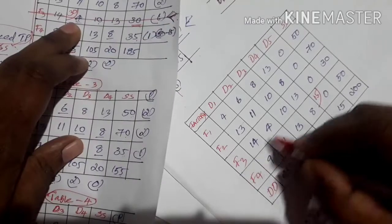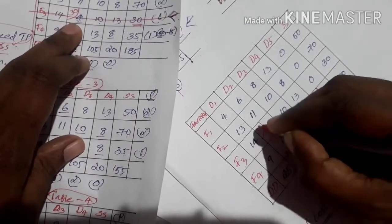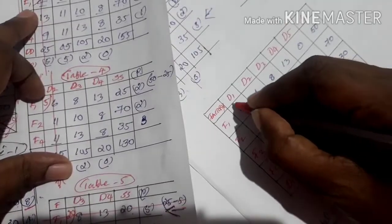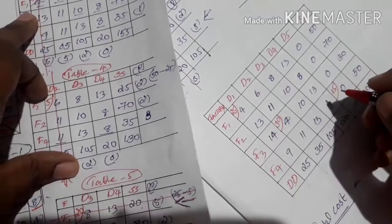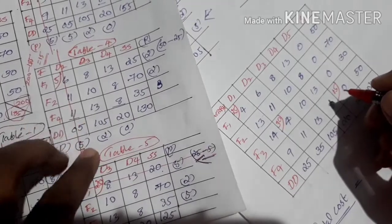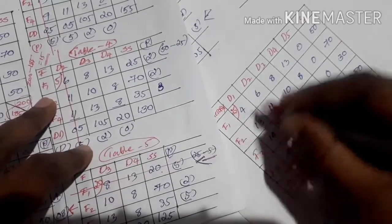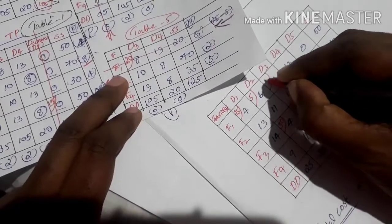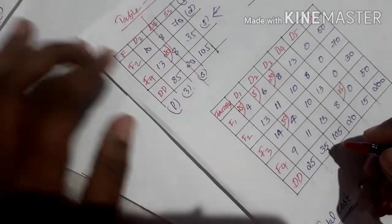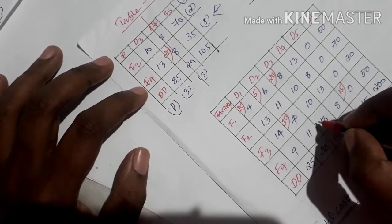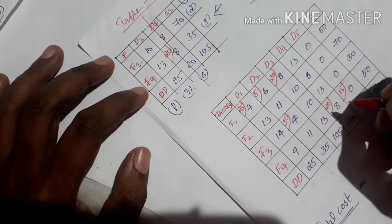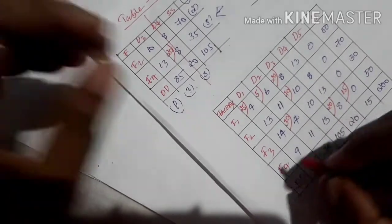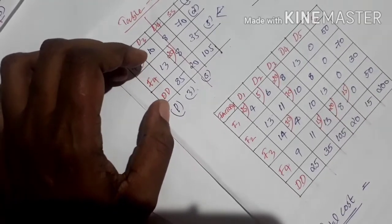Summarizing all allocations: F3-D2 at cost 4, 30 units. Table 3: F1-D1 at cost 4, 25 units. Table 4: F1-D2 at cost 6, 5 units. Table 5: F1-D3 at cost 8, 20 units. Table 6: F4-D4 at cost 8, 20 units. Table 7: F2-D3 at cost 10, 70 units; F4-D3 at cost 13, 15 units. These are all the allocations.